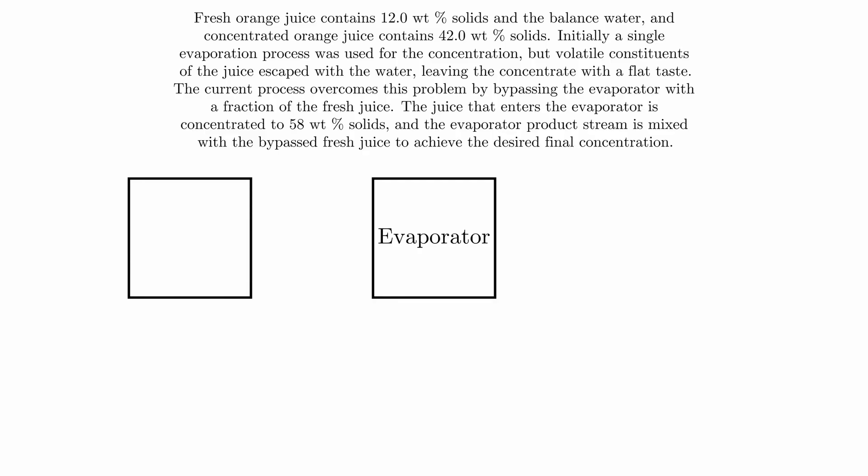We can represent this by adding a bypass unit before the reactor, and then adding a mixing point after the reactor. And now we can label our feed into the bypass, which I'll label as M1, and this contains 12 weight percent solids.